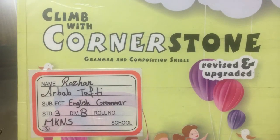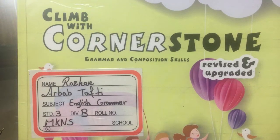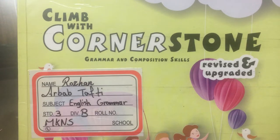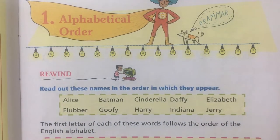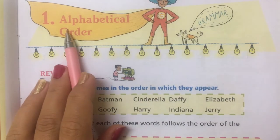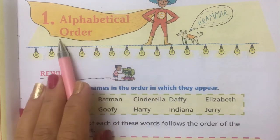Hello, Lily here. Today we are starting with Class 3, Lesson 1 and 2 of your Climb the Cornerstone Grammar and Composition Skills from your textbook. And the name of the chapter is Alphabetical Order.